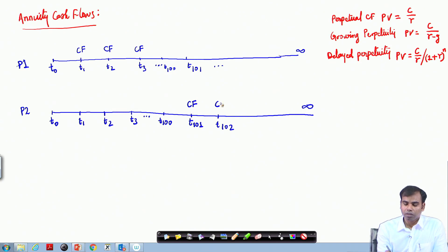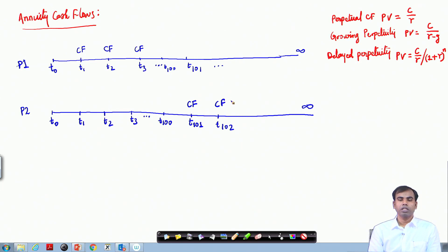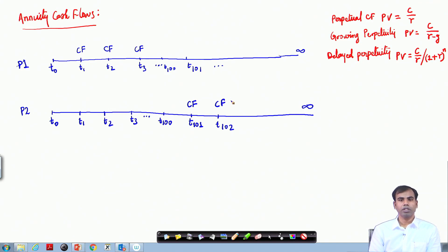Comparing the two: Project 1 generates cash flows starting at T1, T2 and so on. In Project 2, cash flows are delayed for the first 100 periods, with the first cash flow originating at T101. So Project 2 is a delayed perpetuity and Project 1 is a simple perpetuity.